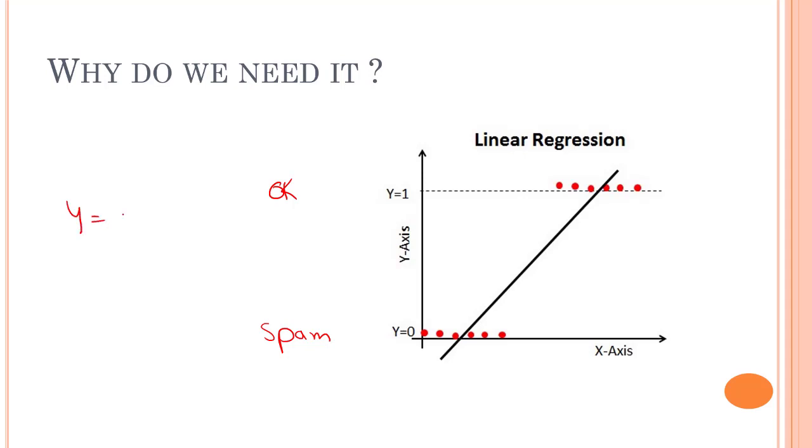If we fit a linear regression model on this dataset where the target variables are Y equals zero and one, we will get a straight line and continuous values. We might get values like 0.6 or 0.8, but we cannot have a target value as 0.6 or 0.8.